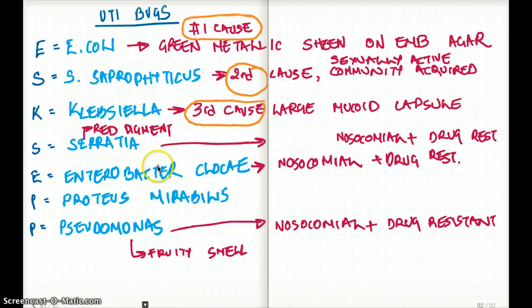But if we talk about the three nosocomial bugs, the three nosocomial bugs are Serratia, Enterobacter cloacae, and Pseudomonas.